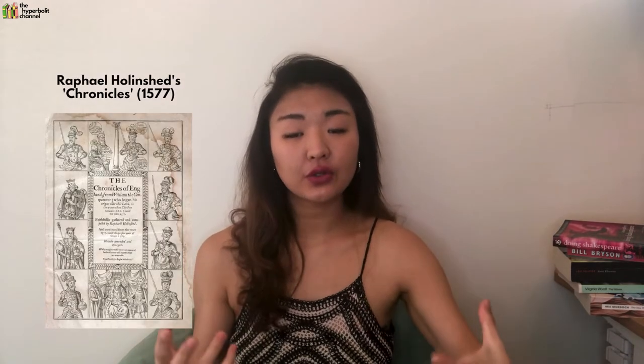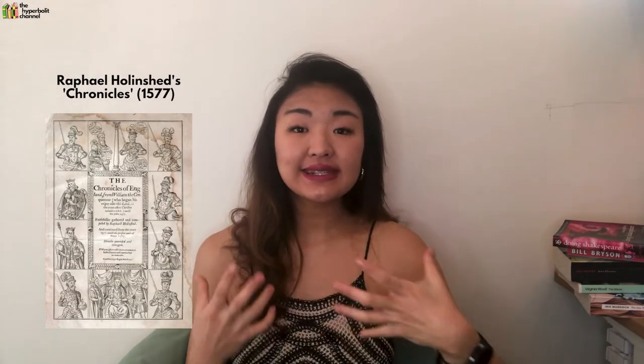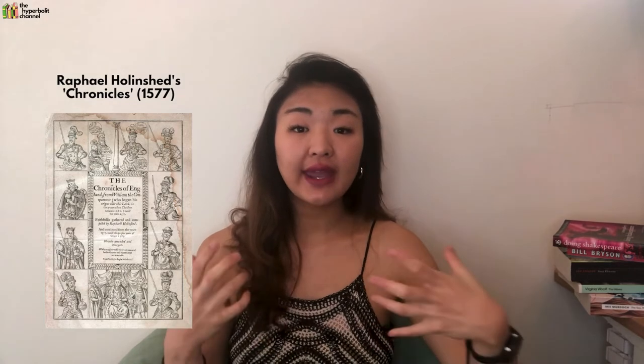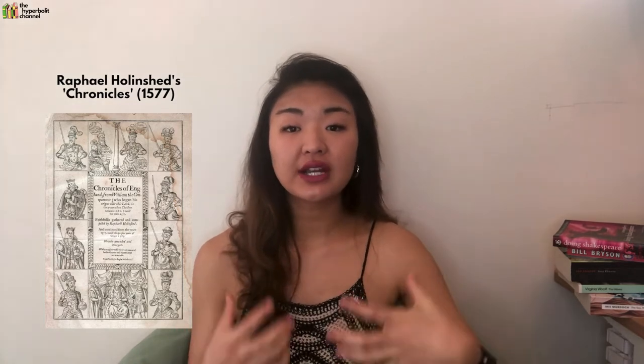Let's start unpacking all of this by looking at the source text, Raphael Holinshed's Chronicles. Chronicles is a 16th century account of England, Scotland and Ireland's history up until the point of writing. In this historical compendium, there's an episode on Macbeth's power grab, which is also the narrative that Shakespeare had adapted for the storyline of his play.